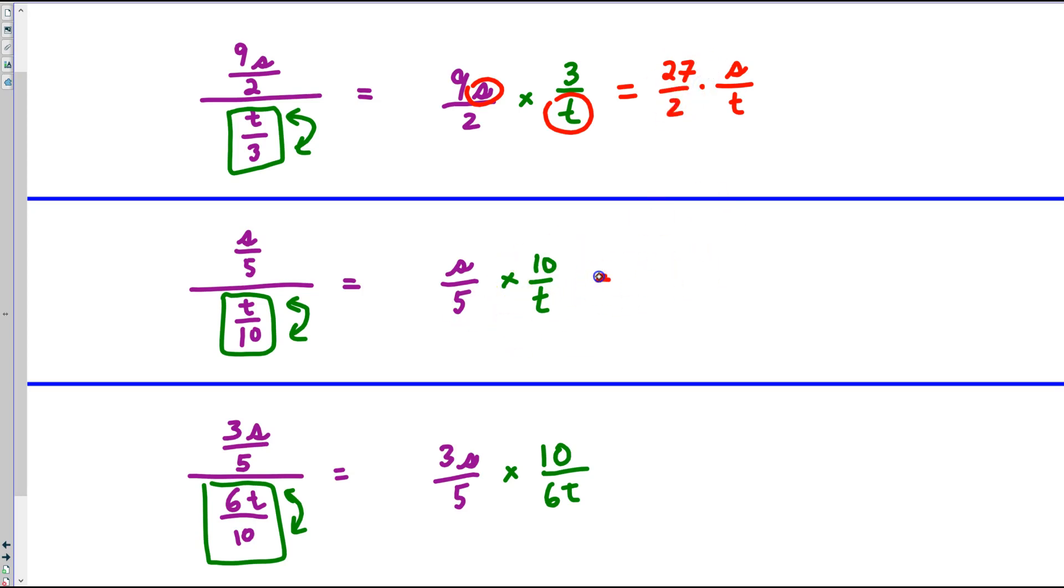Here, we would have again s over t, combine the values, 10 over 5, that's 2.